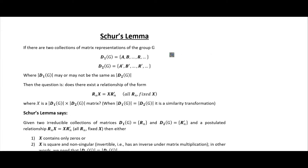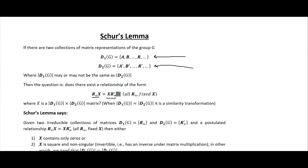Say we have these irreducible representations of a group G — the primed and unprimed here — where the order of them may not be the same. Then the question is: does there exist a relationship of this form, where we have our matrix representations matrix-multiplied by some matrix X, equaling X matrix-multiplied by the primed version of the irreducible representations? We can call this G and H, so it's a G by H matrix.